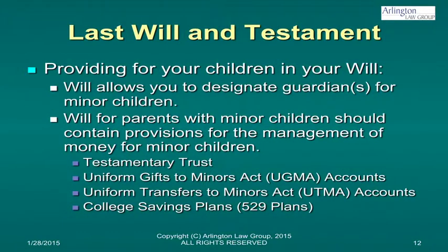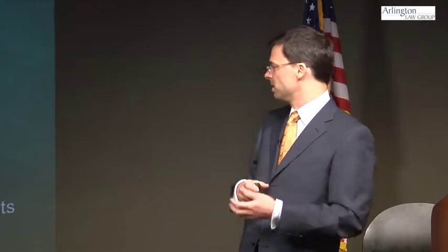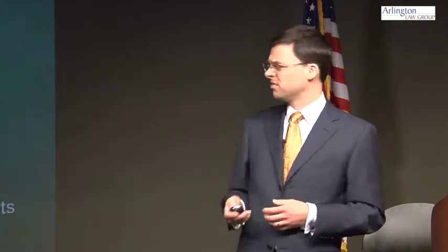How do you provide for your children in your will? We talked about designated guardians. A will for parents with minor children needs to think about how we're going to manage the money for the kids. Are we going to have special rules requiring the child to reach a certain age or finish college before they have access to the money? Or are we going to use default rules like the Uniform Gifts to Minors Act or Uniform Transfers to Minors Act, where there's a custodian holding the money for the benefit of the child? Or can we put money into a college savings account — I'll talk about 529 accounts and their benefits a bit later.